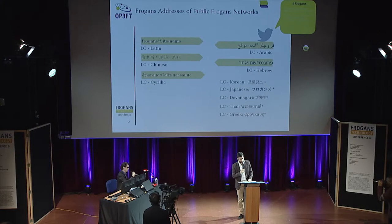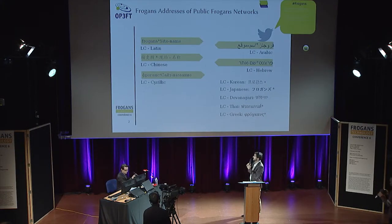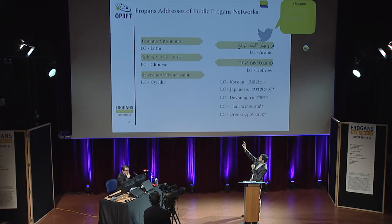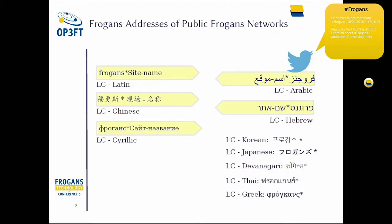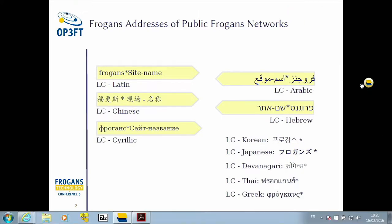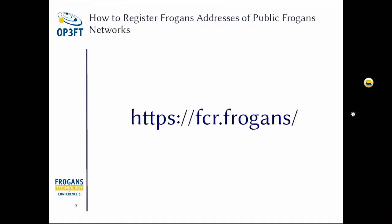This is typically what a Frogans address could look like. You can see Frogans is on the right side in Arabic. If it's Latin-based, Frogans is on the left side because we're going left to right. What you can register and customize is the site name.